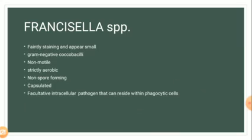Francisella species are faintly stained and appear small. They are gram-negative coccobacilli, non-motile, strictly aerobic — meaning they require oxygen for growth — non-spore forming, and capsulated. The capsule of F. tularensis is a necessary component for expression of full virulence, allowing the organism to avoid immediate destruction by polymorphonuclear neutrophils. Francisella species are also facultative intracellular pathogens that can reside within phagocytic cells.